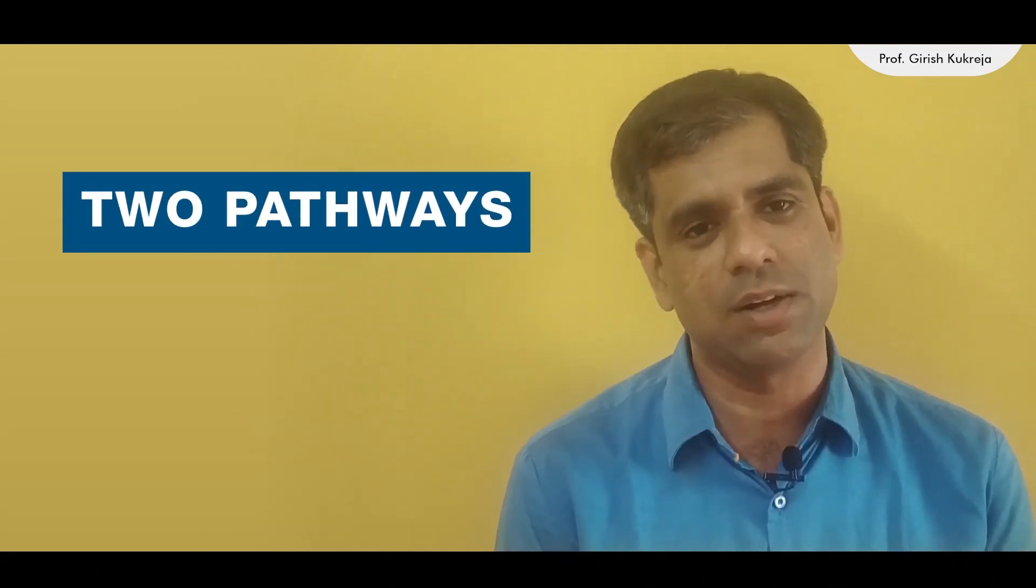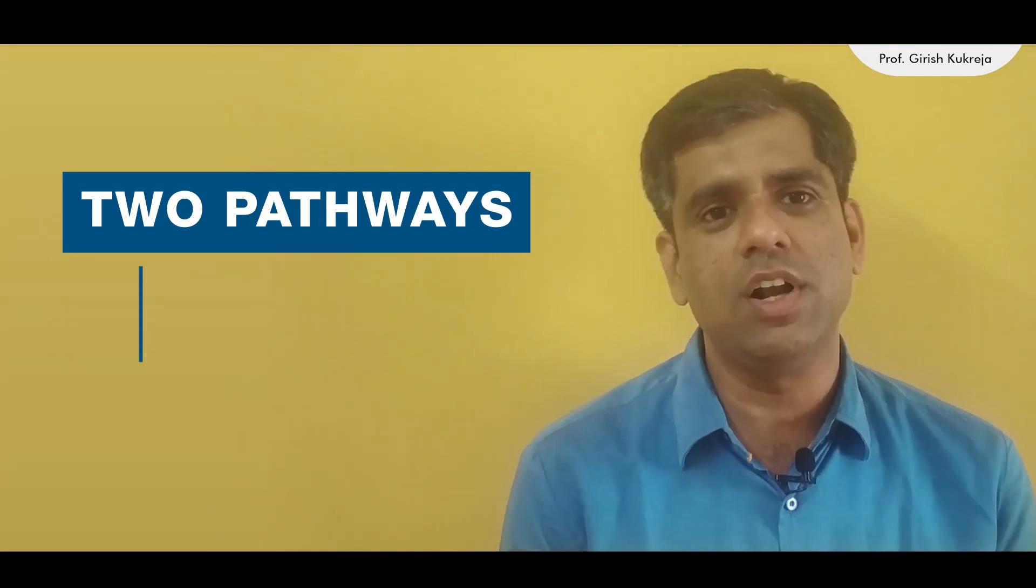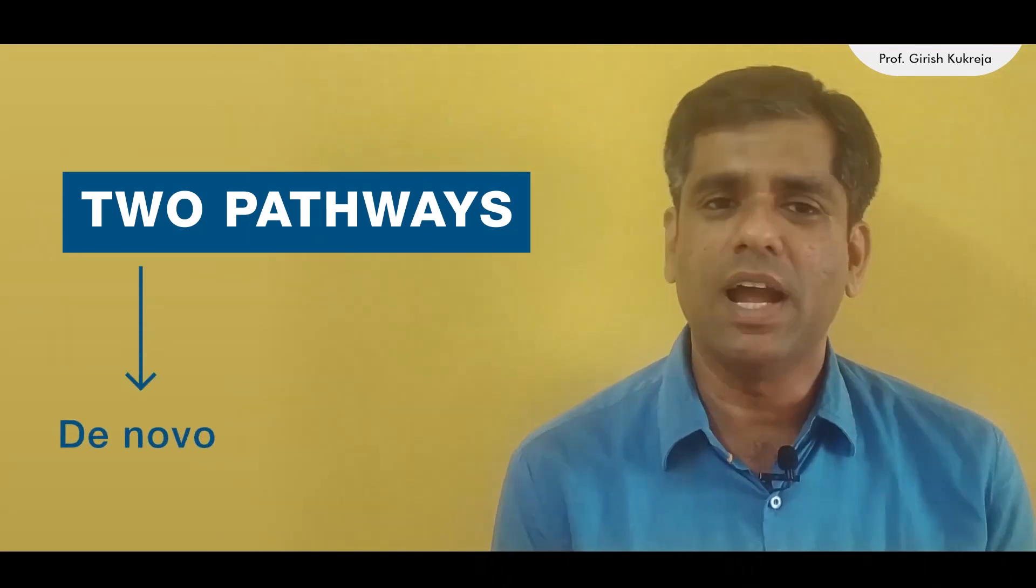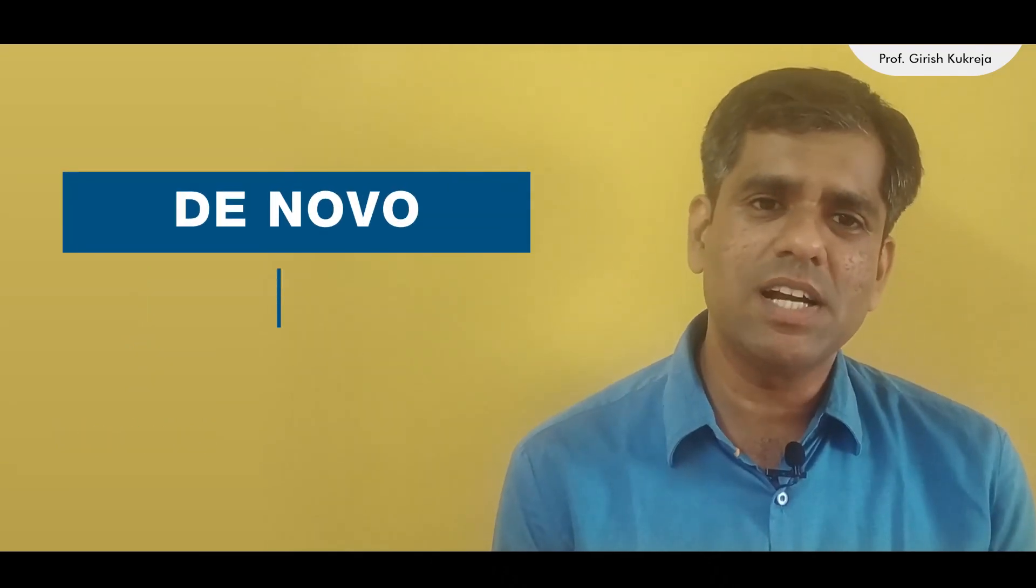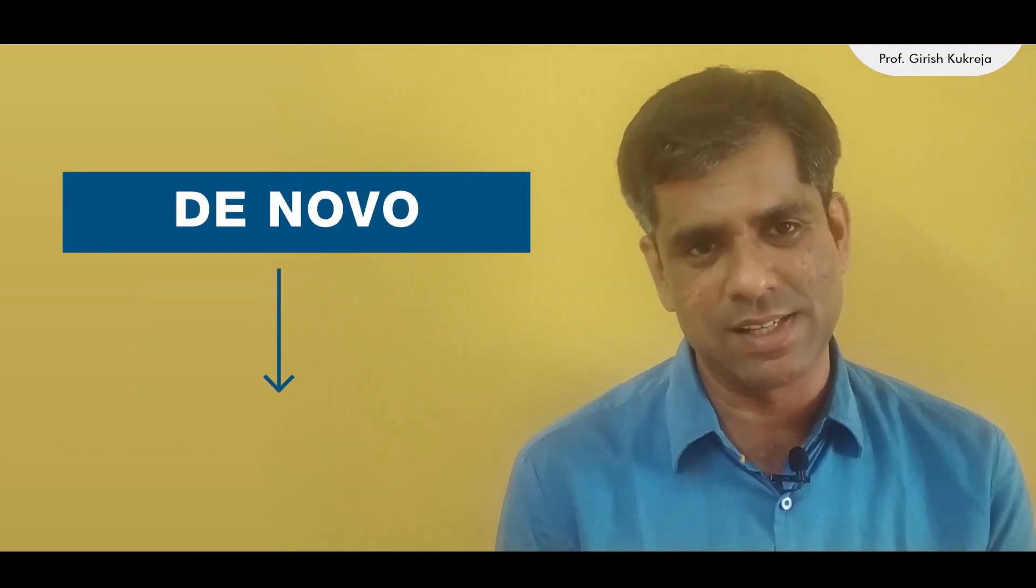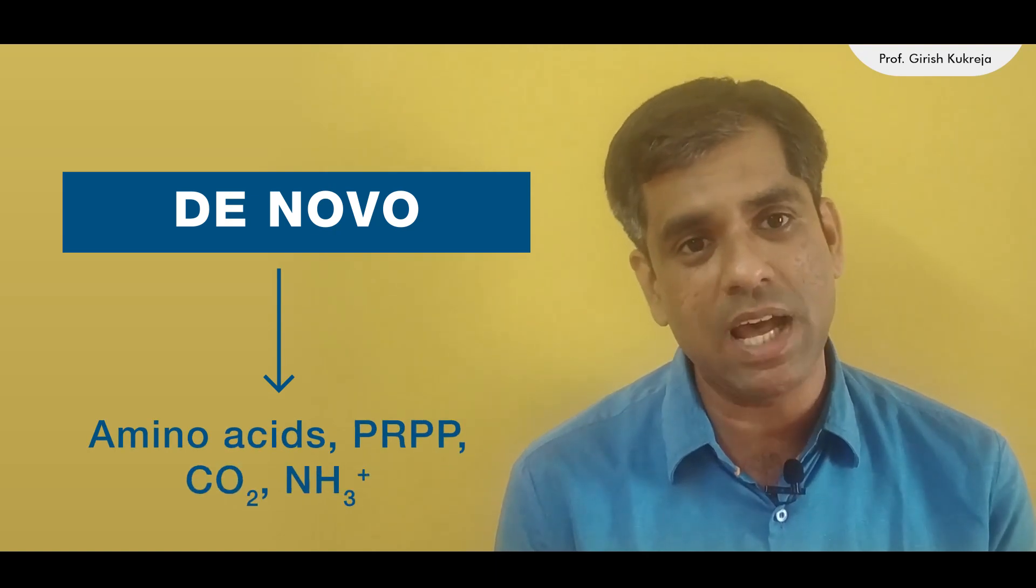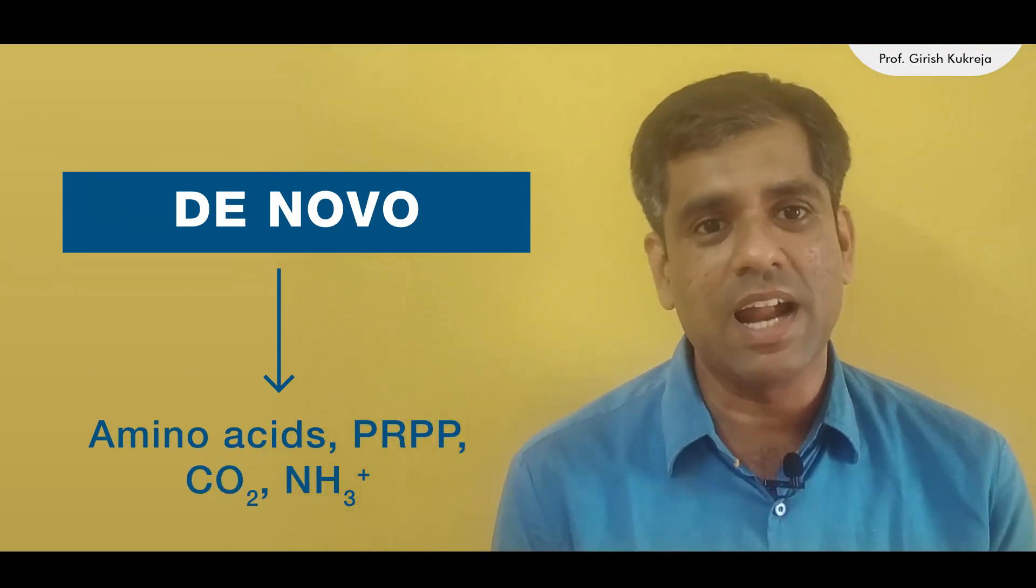As far as the synthesis of these nucleotides is concerned, there are basically two pathways in which this is accomplished. The first is called the de novo pathway and the second is called the salvage pathway. The de novo pathway starts from its basic metabolic precursors like amino acids, PRPP, carbon dioxide, and ammonia.